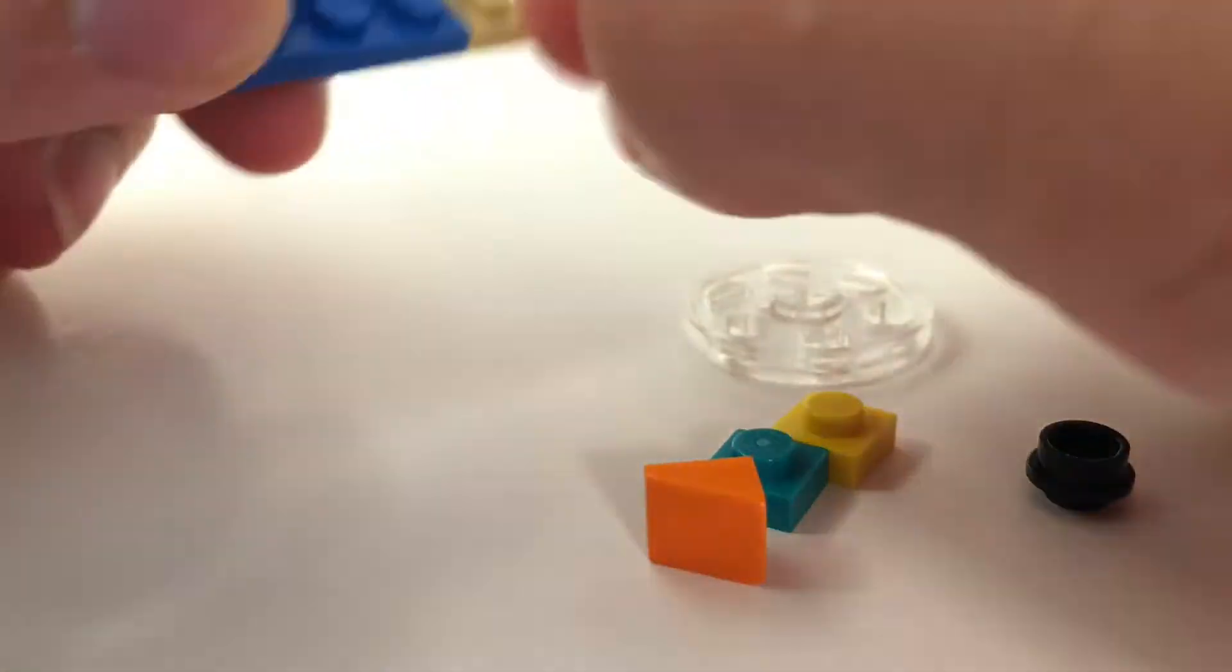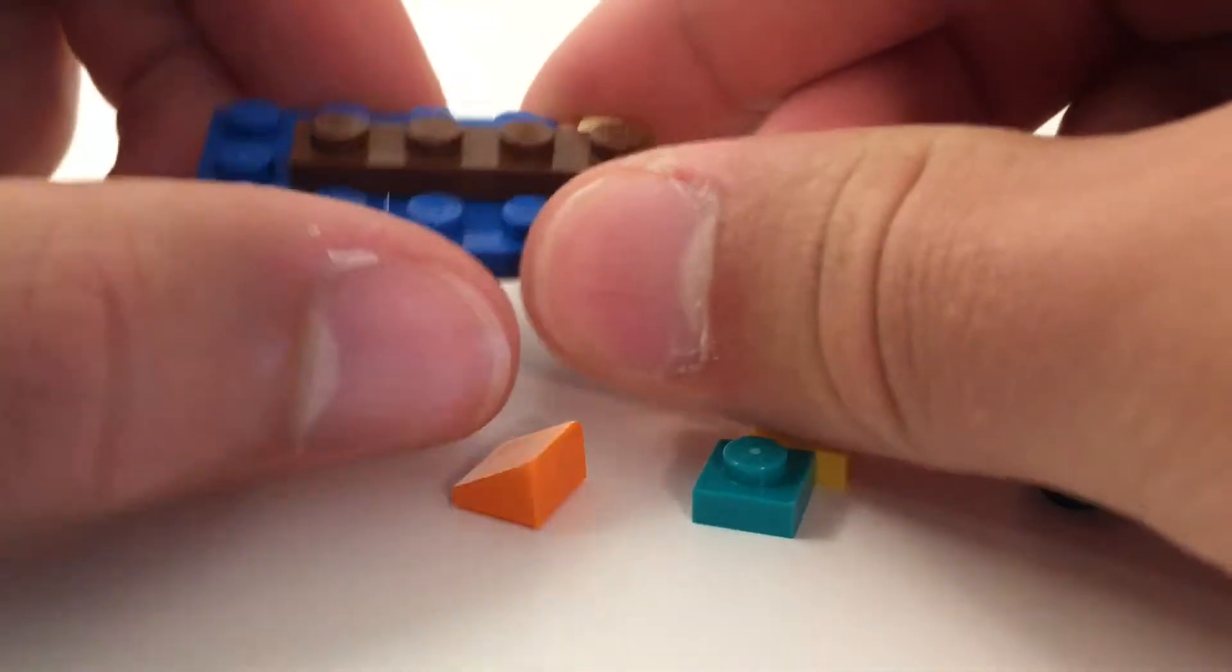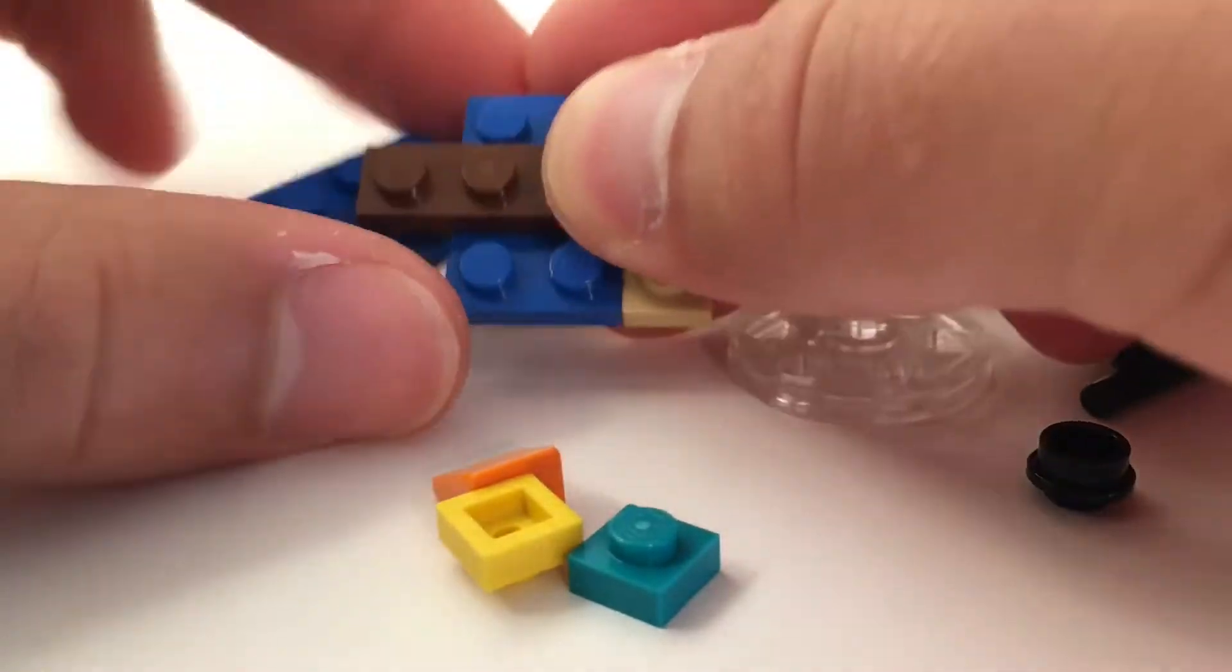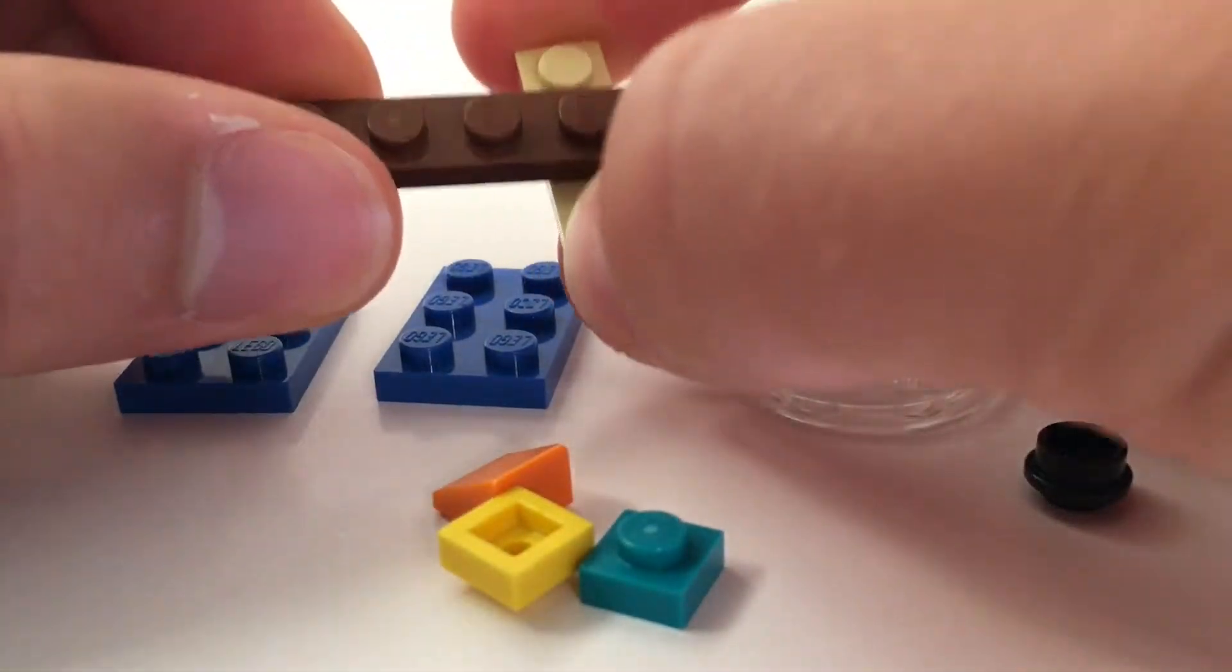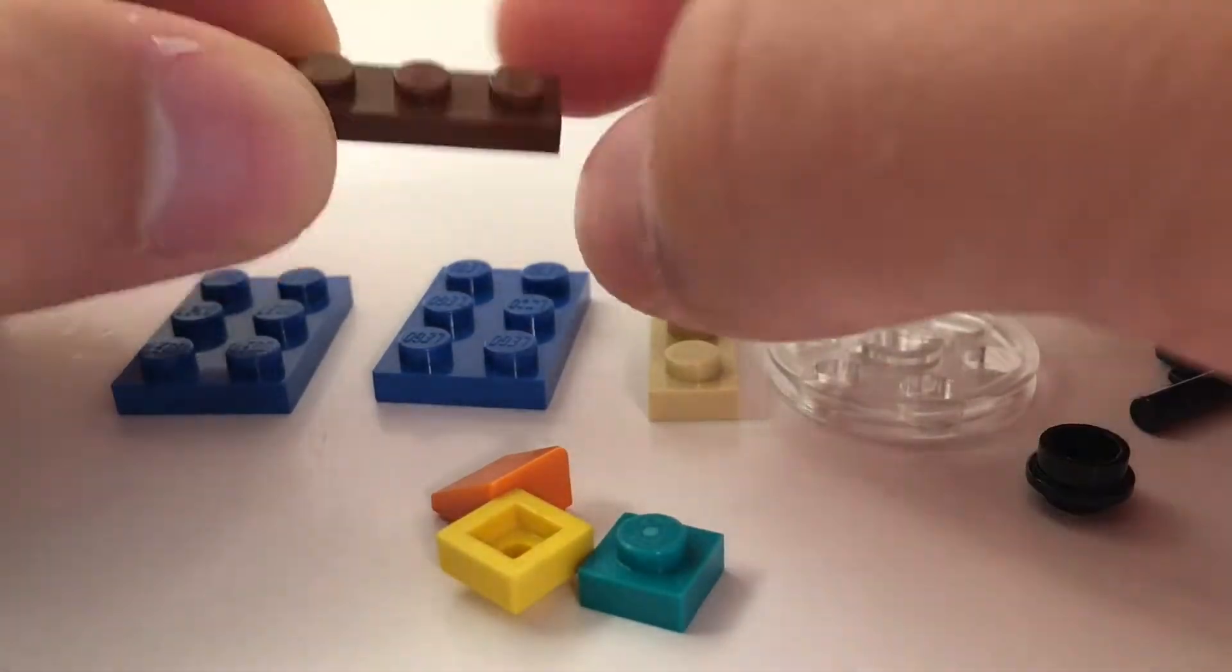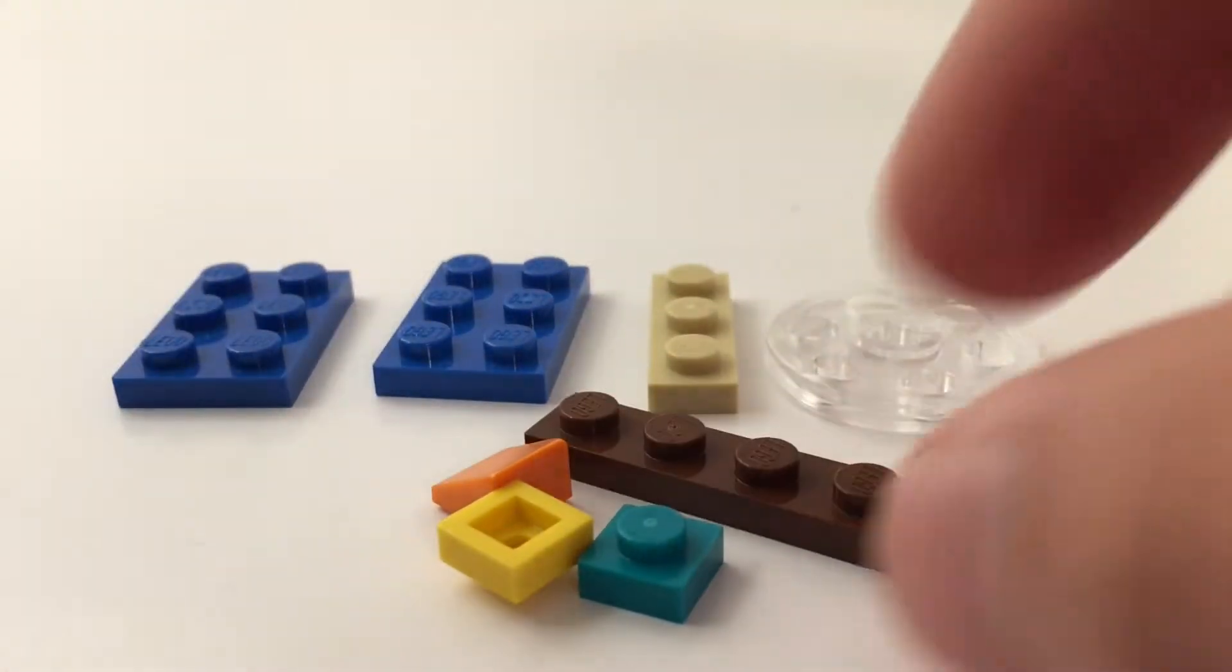So then we just have an orange cheese slope representing our last building. As you can see, the ocean is built with two two by three plates, the sand is built with a one by three plate, and our pier is a brown one by four plate.